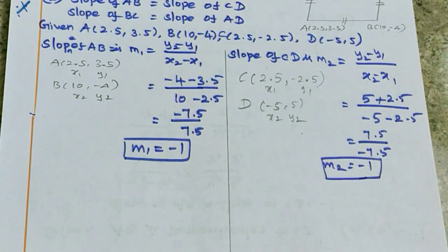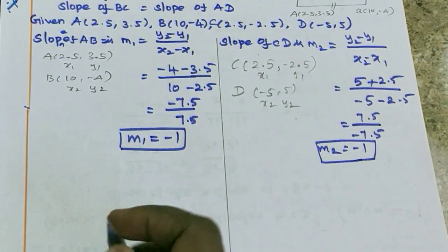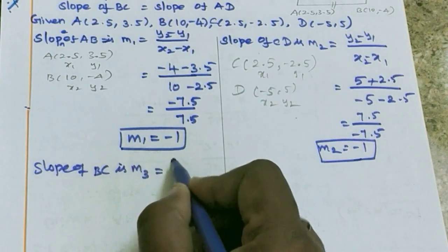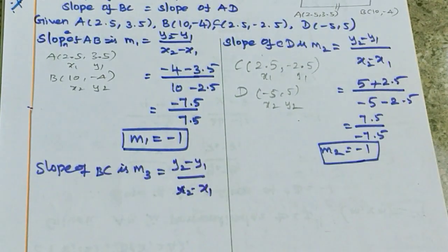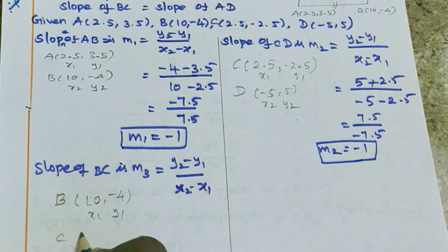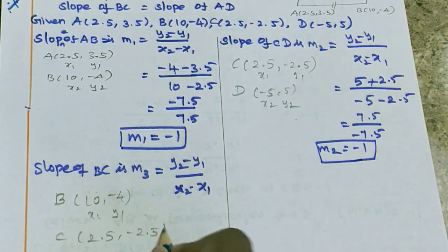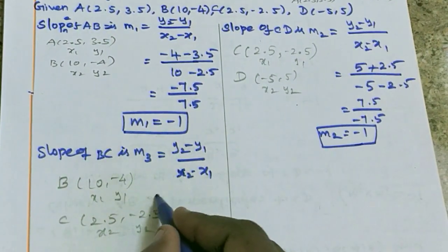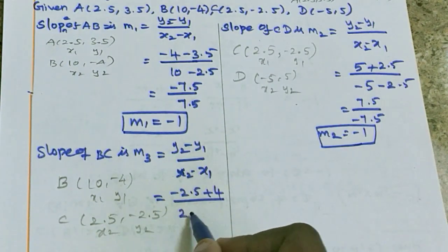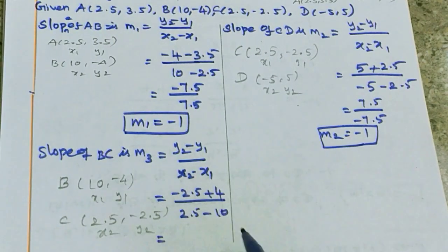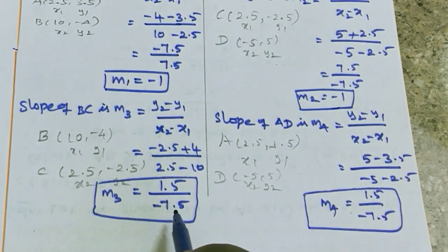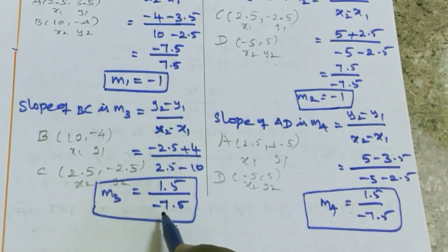AB and CD values are finished. Next, find the slope of BC and AD. Slope of BC is M3. Again using the same slope formula, choose the points: B is (10, minus 4), this is x1, y1. Next, C is (2.5, minus 2.5), this is x2, y2. Substitute the points: y2 is minus 2.5, y1 is minus 4 - so applying the formula, plus 4. x2 value is 2.5, x1 is minus 10. So 2.5 minus minus 10 gives 1.5 over 7.5, and after the sign is applied, minus comes in. Same process for slope of AD, so those slopes will match.